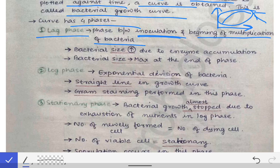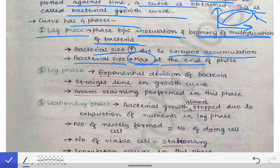In the lag phase, since bacteria accumulates enzymes, the size of the bacteria increases — and bacterial size is maximum at the end of this phase. Among all four phases, the maximum size of bacteria is seen only after the lag phase. This is a very important MCQ point: the phase in which bacterial size is maximum is the lag phase.